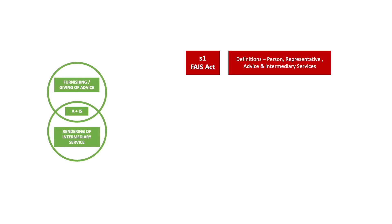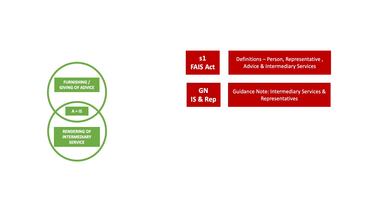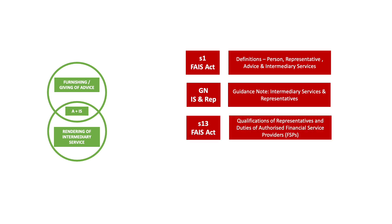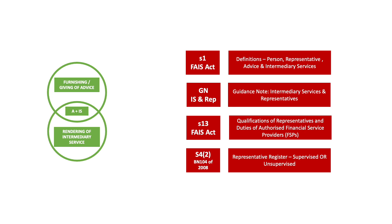We are going to cover the following sections: Section 1 of the FAIS Act, which covers the definition of a representative and intermediary services; the guidance note on intermediary services and representatives; Section 13 of the FAIS Act, which covers the qualifications of representatives and duties or responsibilities of an authorized financial service provider; and Section 4 subsection 2 of Board Notice 104 of 2008, covering the split of supervised versus non-supervised representatives on the representative register.